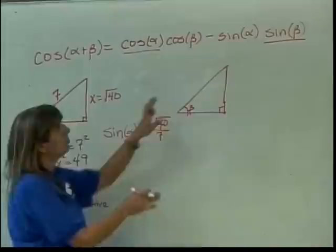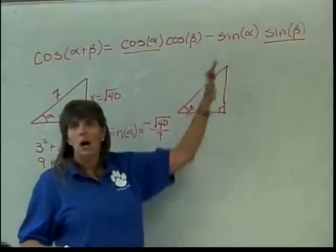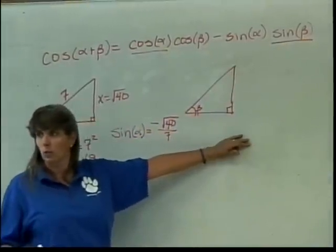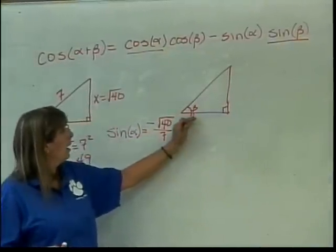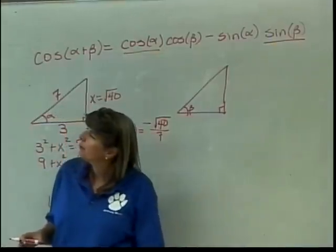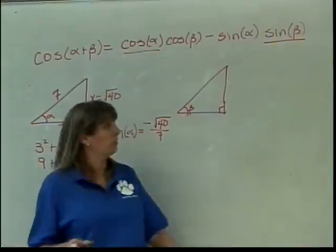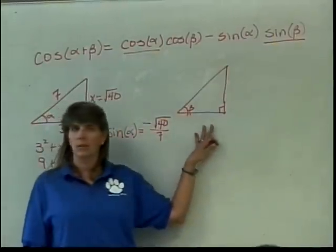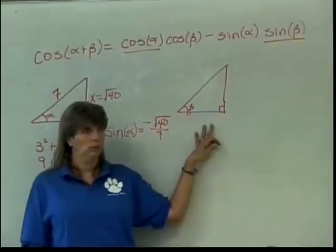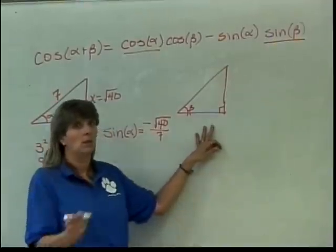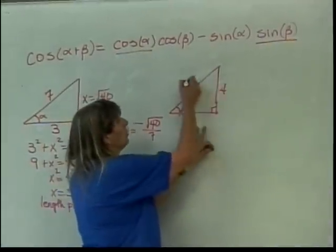Okay. So now I have the sine of alpha. I'll be able to plug it in there. I'll now move on to the other triangle and deal with beta. What do I know about beta? The sine of beta is 4 fifths. So what does that mean in terms of sides of my triangle?